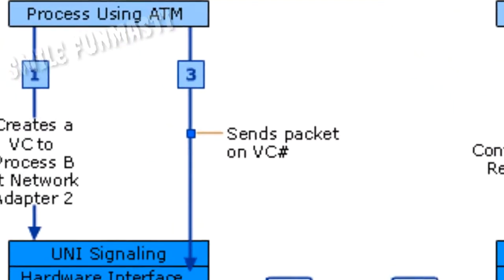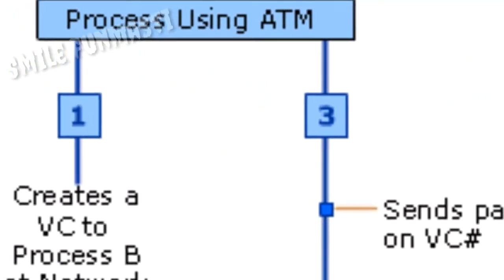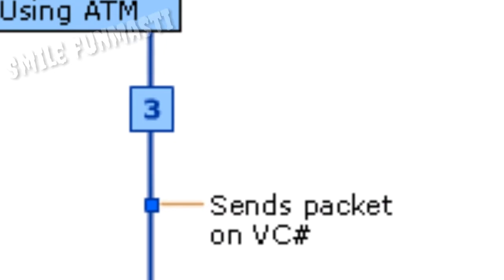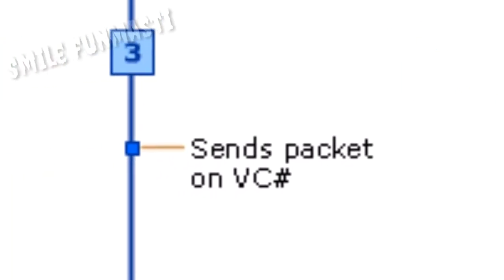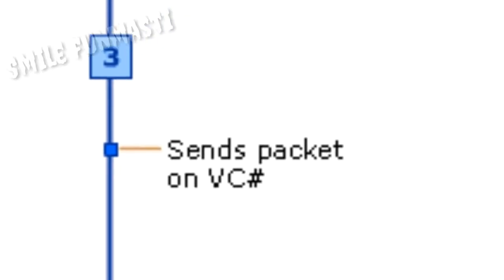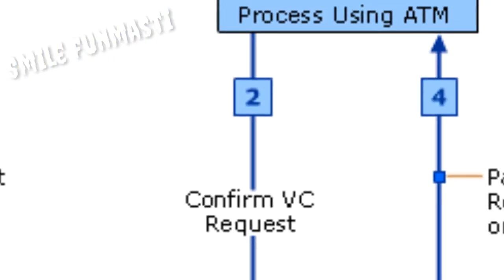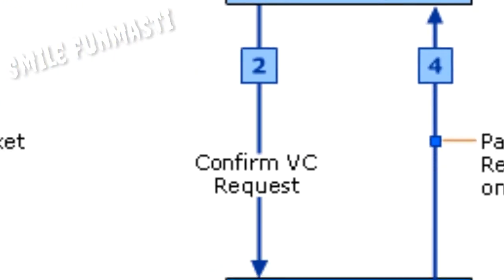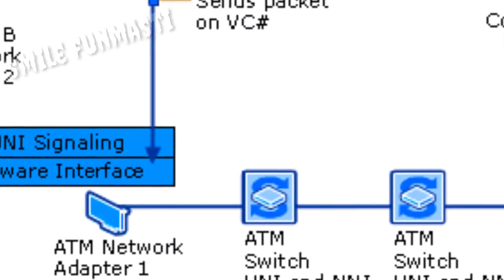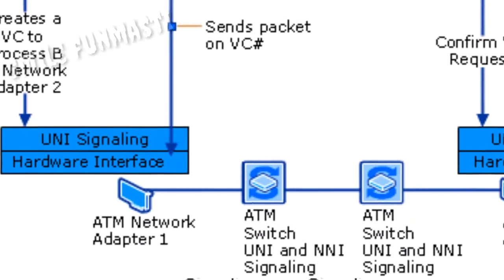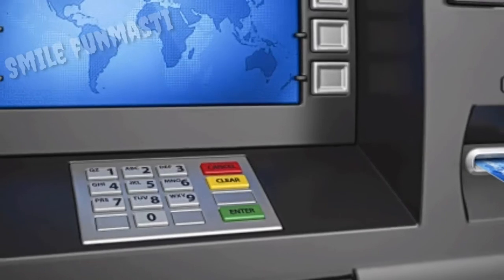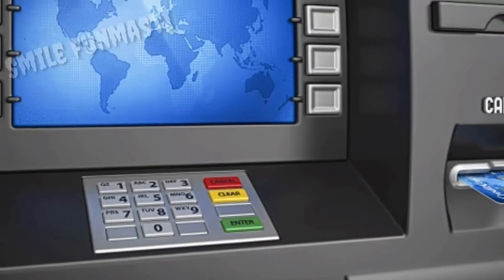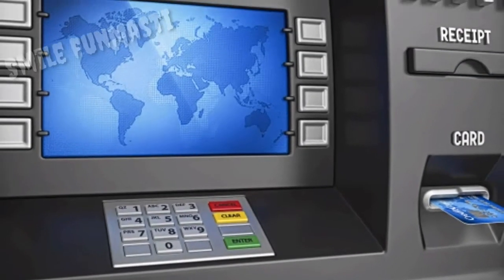The client enters the amount to withdraw. The machine's request goes to the host processor. The host server sends the transaction request to the client's bank, which approves the amount. The fund transfer then happens between the client's bank and the host processor's account. Once the transaction is done, the host processor sends the approval code to the ATM, which allows the ATM machine to dispense the money.